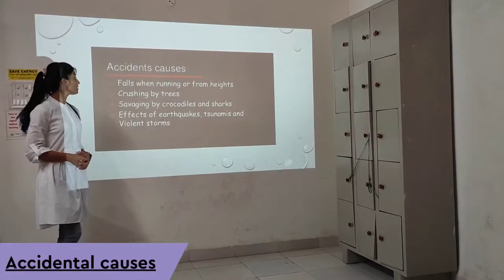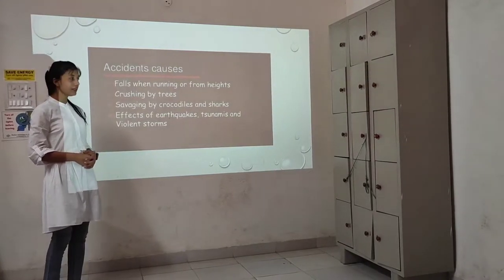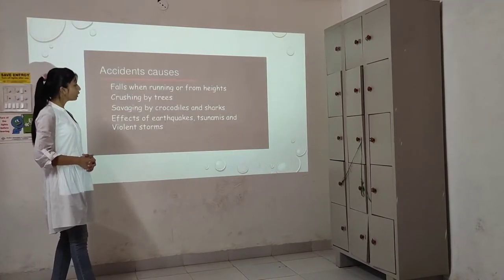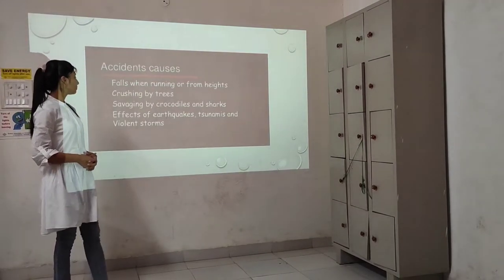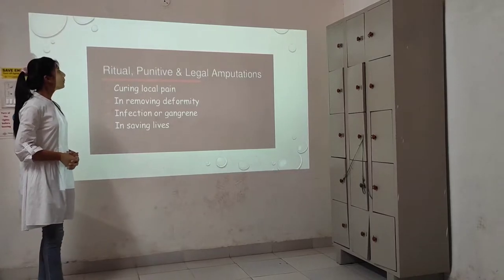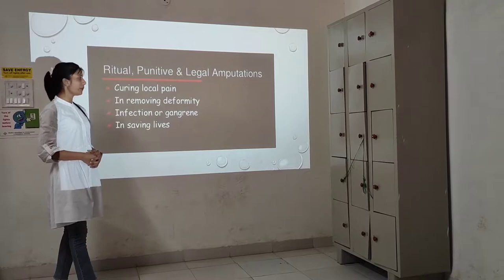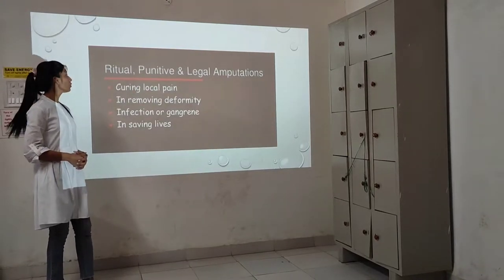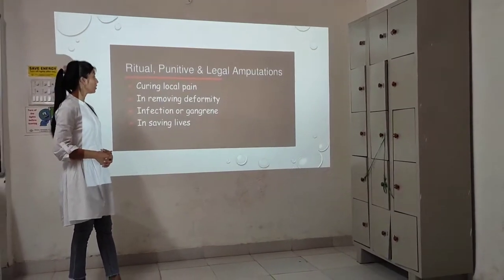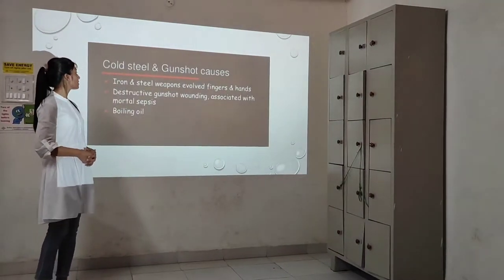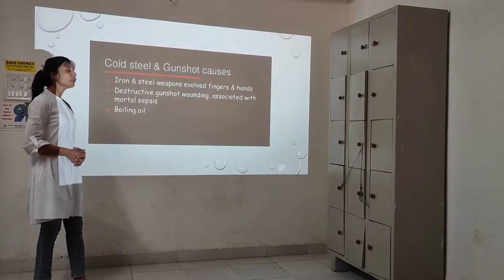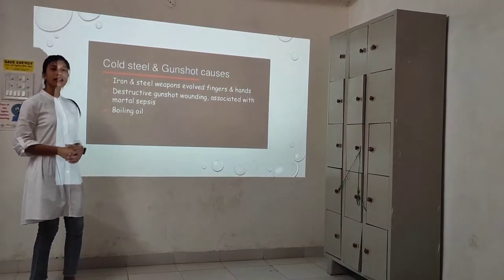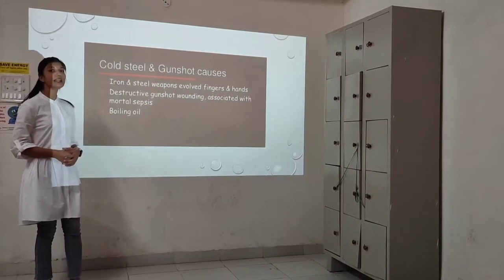Accidental causes include falls from height, crushing by trees, savaging by crocodiles and sharks, and effects of earthquakes, tsunamis, and violent storms. Ritual, punitive, and lethal amputations include curing local prey, removing deformities, infections, and saving life. Cold, steel, and gunshot causes include iron and steel weapons, severed fingers and hands, destructive gunshot wounds associated with mortal sepsis, and the effects of boiling oil.